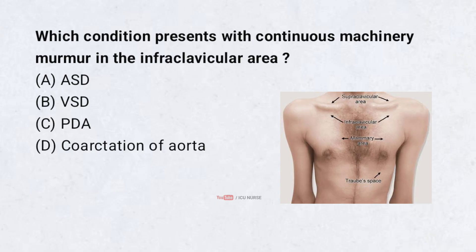Which condition presents with a continuous machinery murmur in the infraclavicular area? A. ASD, B. VSD, C. PDA, D. Coarctation of aorta. Correct answer: C. PDA.